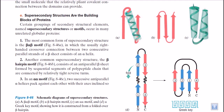Motifs are actually based on the interactions of the domains which are secondary structures. There are secondary structures like alpha helix and beta sheets. All these secondary structures will work together and interact together to make motifs. So motifs are basically the interaction between alpha helices, beta sheets, beta turns, and all these secondary structures — the interaction between them are called motifs.